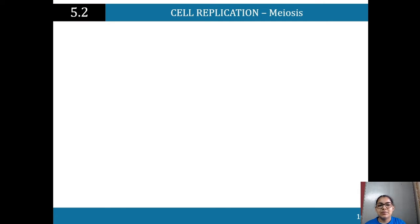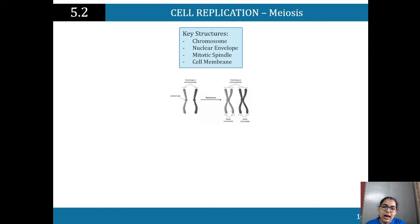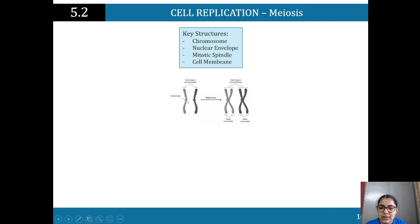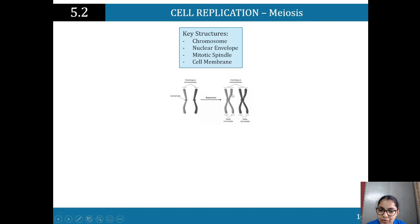Cell replication — meiosis. I'm getting straight into meiosis today. As we know there's mitosis and meiosis, but because we're looking at cell replication and genetic material being transferred, we're looking specifically at meiosis. Key structures to look at: chromosomes, nuclear envelopes, a mitotic spindle, and the cell membrane. We've got homologous chromosomes here — the middle part is the centromere, so chromosomes are counted by the centromere. We're replicating that chromosome, and a copy is made — these two are called sister chromatids, and they're both homologous chromosomes.